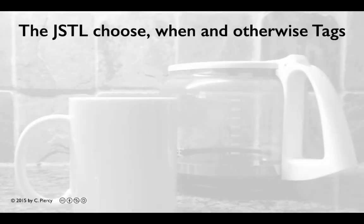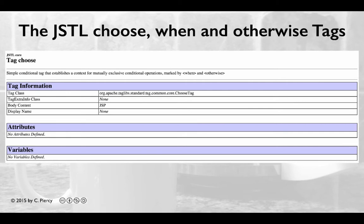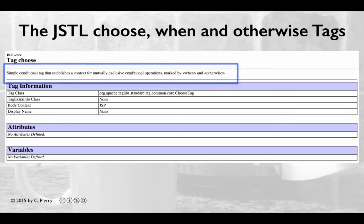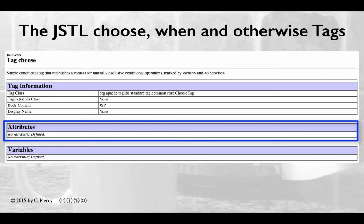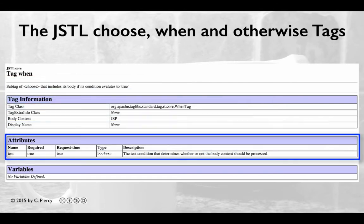You might recall from Java that one option you can use instead of using if blocks is known as the select block, in which case you compare a value and select the appropriate set of tests. Similar capability exists within the JSTL by combining the JSTL tags choose, when, and otherwise. The choose tag is a simple conditional tag that establishes a context for which we can choose some mutually exclusive conditional operations — those operations will be marked by the when and the otherwise. Note there are no attributes for the choose tag. Keep in mind that if we use multiple whens within a choose, all conditions need to result in mutually exclusive possibilities.